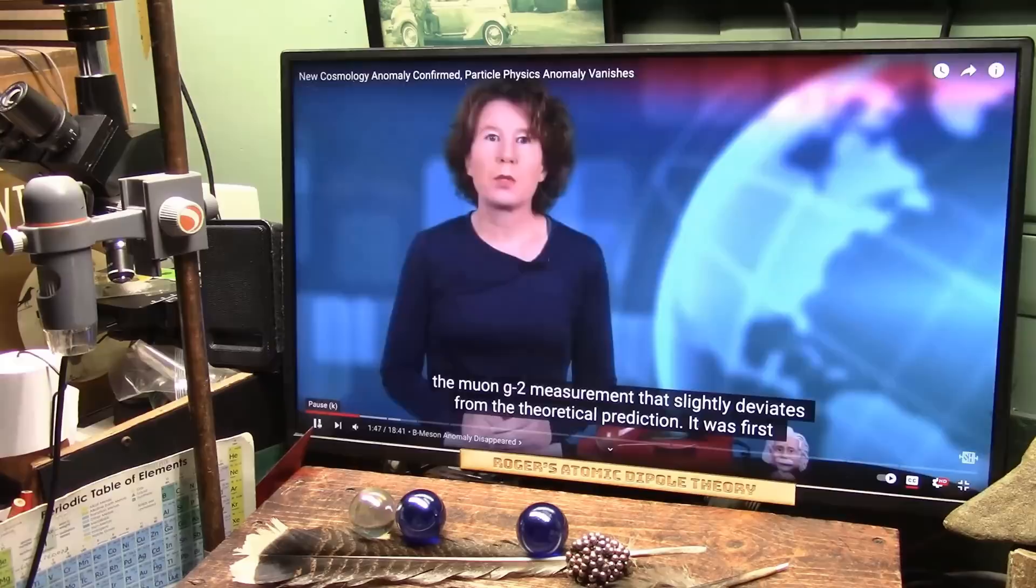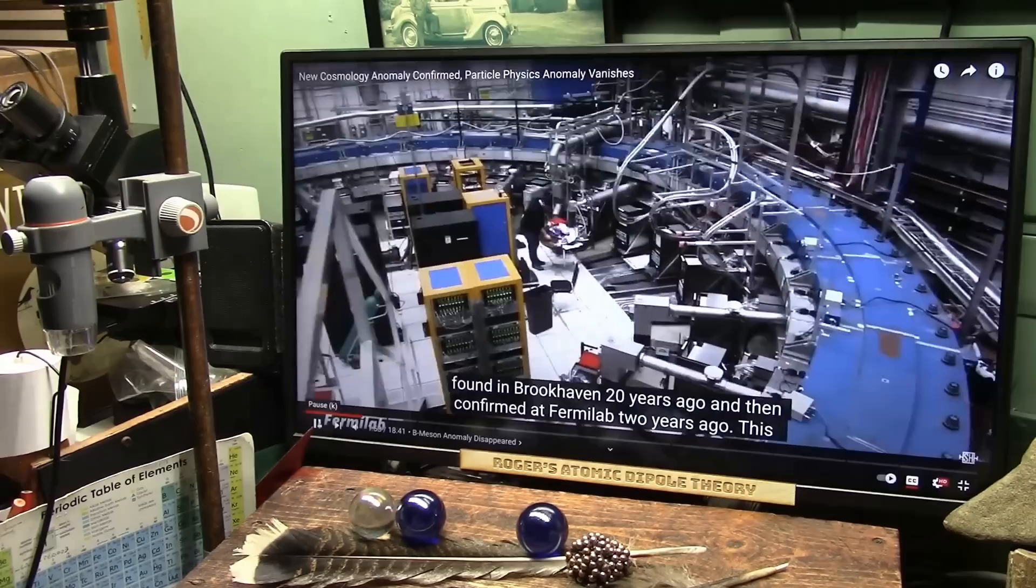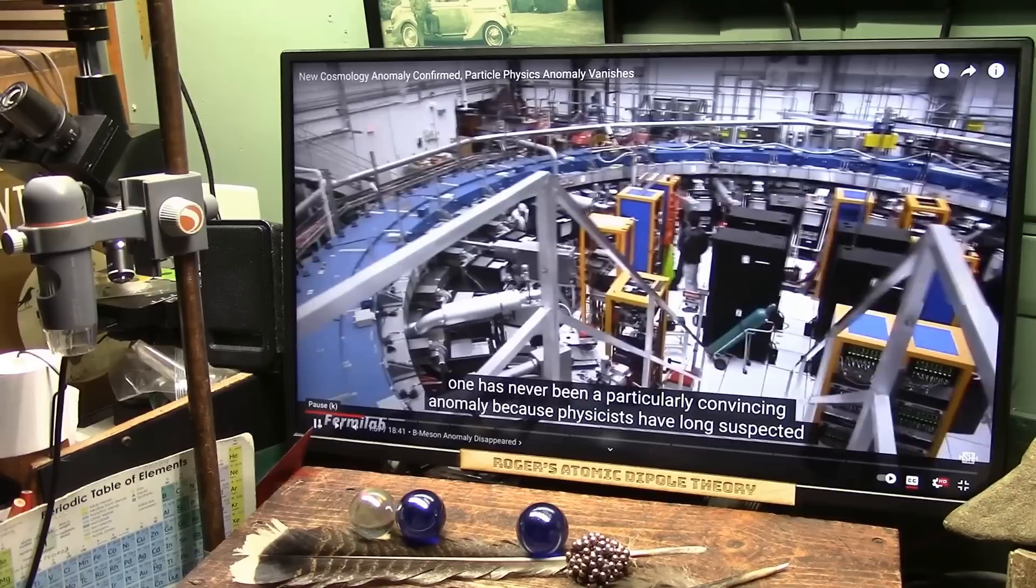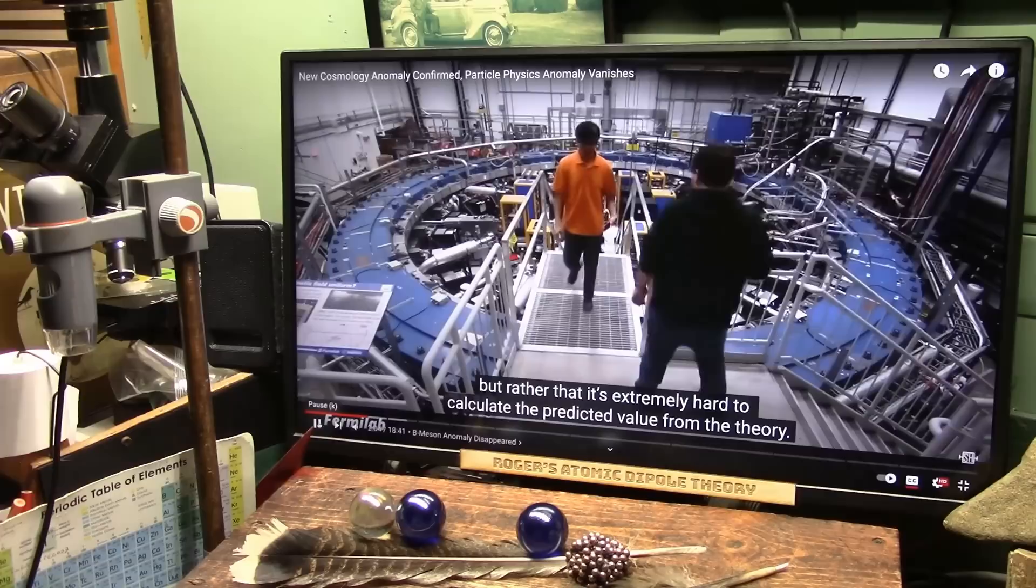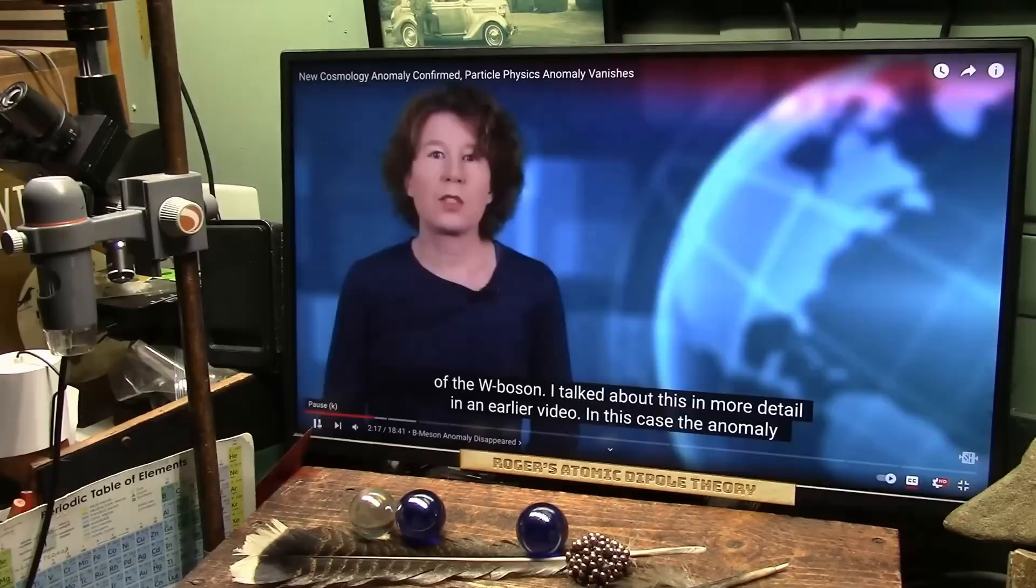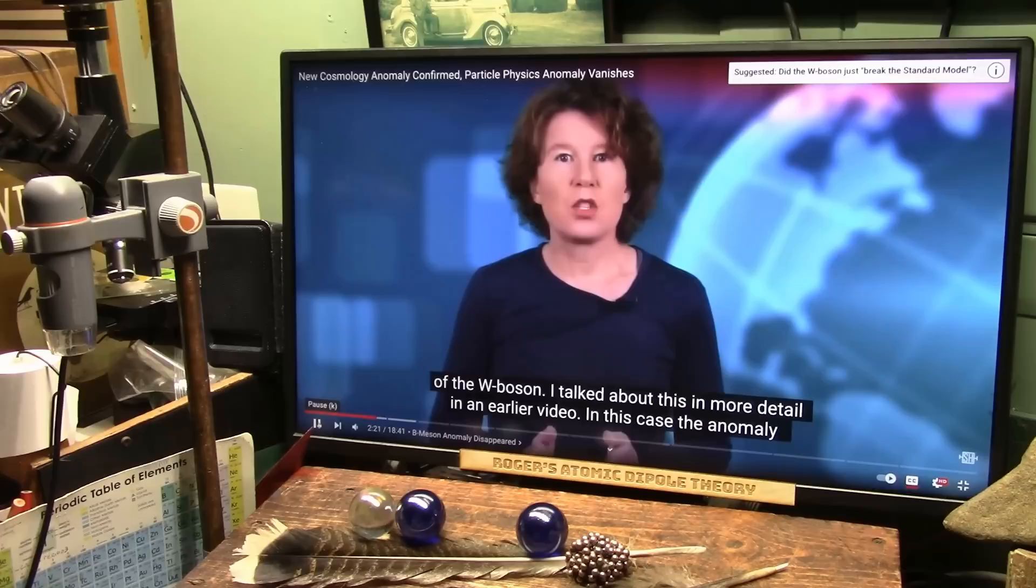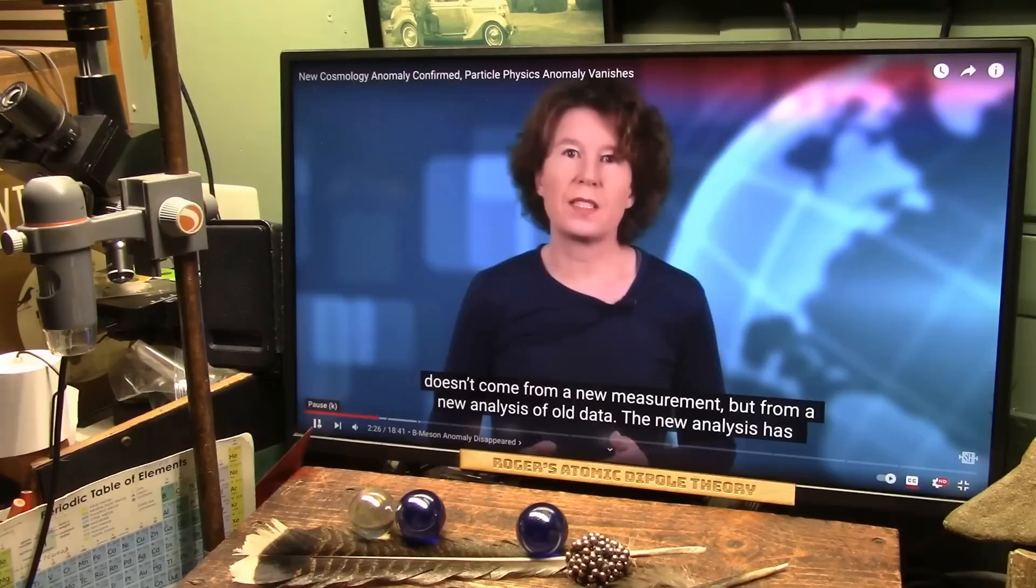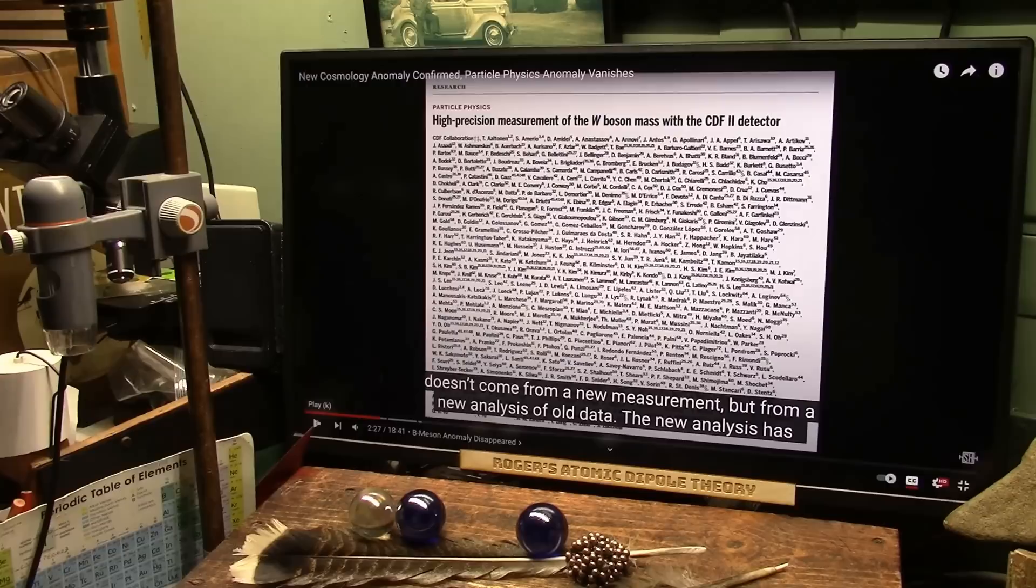One is the muon g-2 measurement that slightly deviates from the theoretical prediction. It was first found in Brookhaven 20 years ago, and then confirmed at Fermilab two years ago. This one has never been a particularly convincing anomaly, because physicists have long suspected that the reason for the discrepancy between prediction and observation isn't the theory, but rather that it's extremely hard to calculate the predicted value from the theory. The third anomaly that you may have seen in the headlines last year is the measurement of the mass of the W-boson.